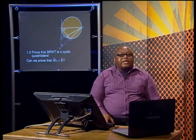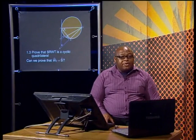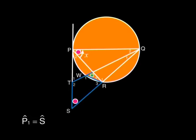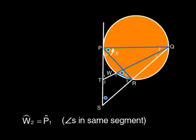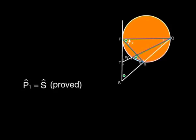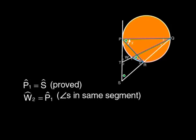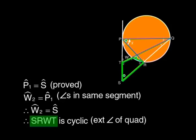It seems that we should look at proving that angle W2 equals angle S. Again, what we have just found in the previous question should be useful. That P1 equals S. Do you see the links? Look carefully. Can you see that W2 equals P1? Yes. There are angles in the same segment subtended by QR. So here is your proof. P1 equals S. It's been proved. W2 equals P1 because of angles in the same segment. And so W2 equals S. So SRWT is cyclic because W2 is the exterior angle equal to the interior opposite angle S. Very good.